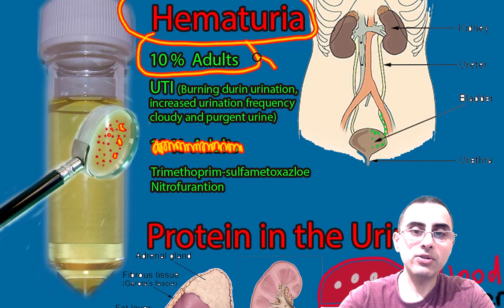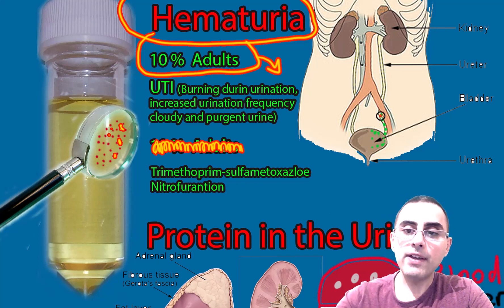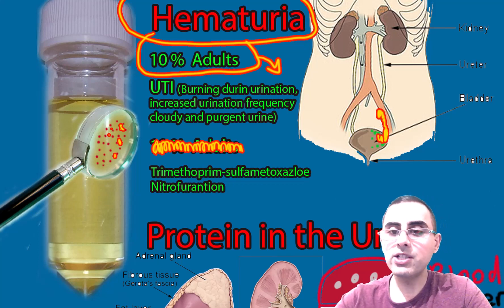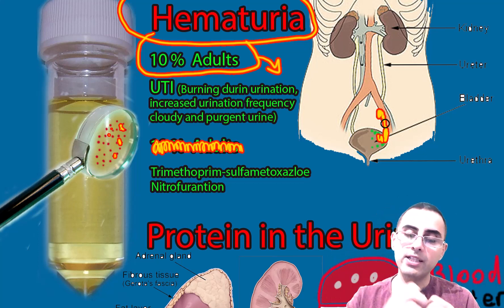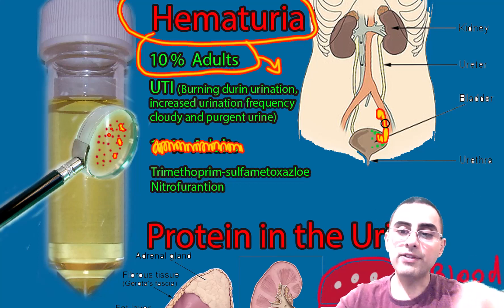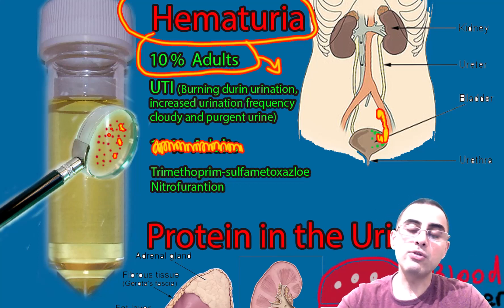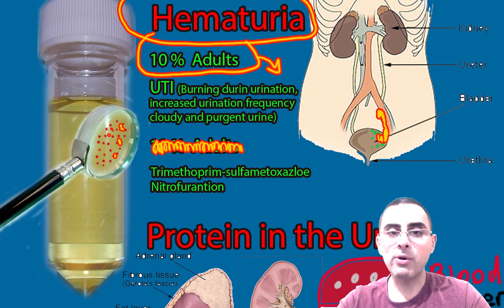The most common cause of hematuria is urinary tract infection. Infection affects the urinary tract, causes inflammation, which damages blood vessels, and blood leaks into the urine. This blood leakage is usually microscopic and not visible to the naked eye, though sometimes it can be visible.